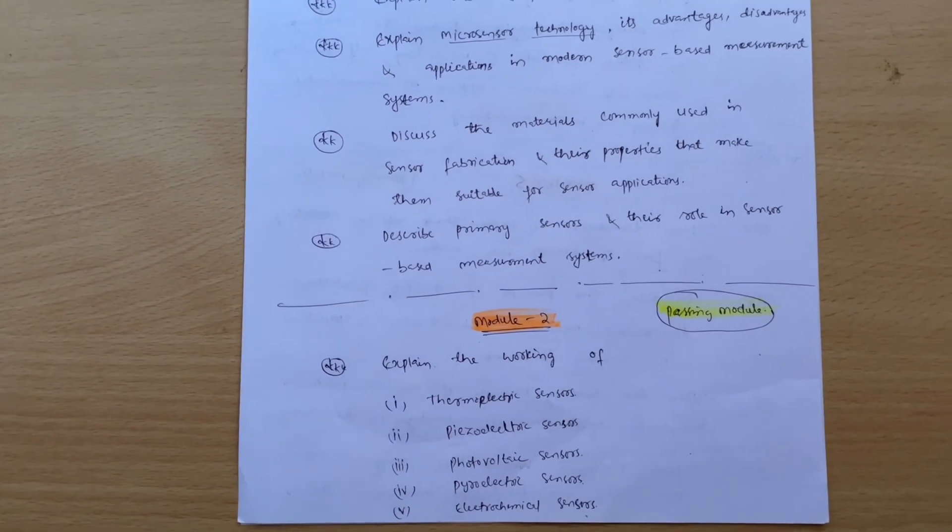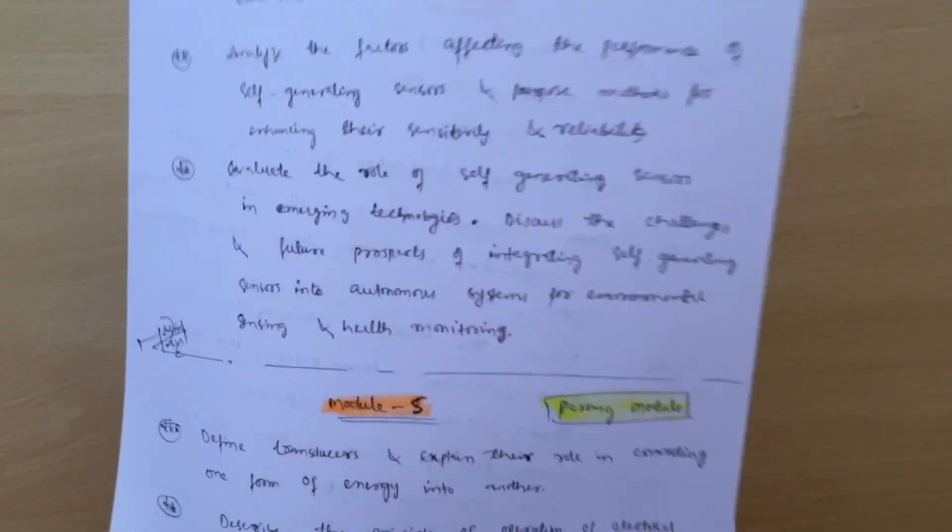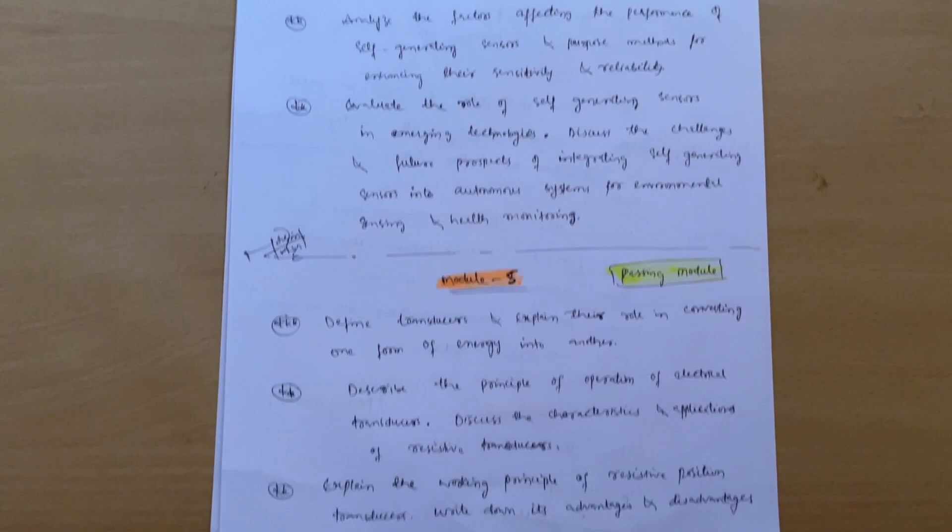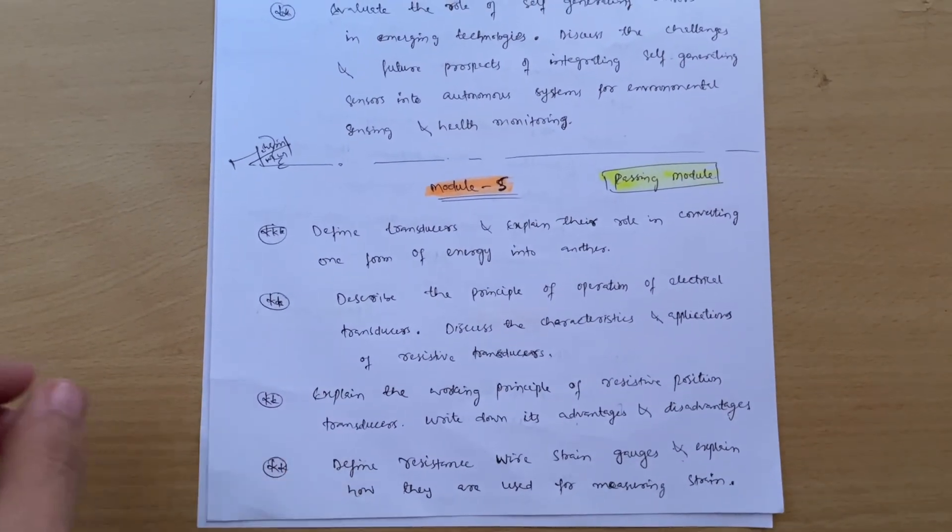This is model two. Up to this it is the model second, then model fifth comes up. This is your model fifth.